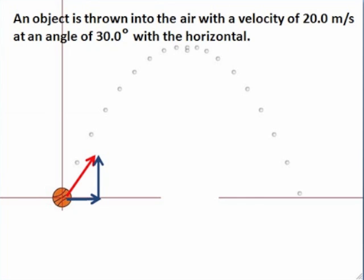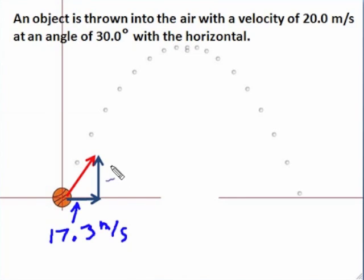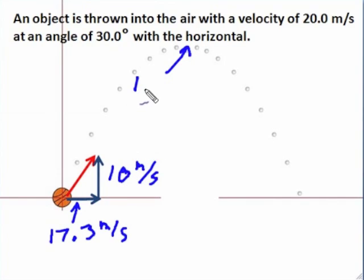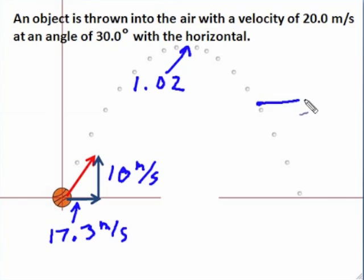We have our projectile with the initial conditions, and we remember that the horizontal component is 17.3. We can't do anything without components. And the vertical component is 10 meters per second. And we know that at the top it was 1.02 seconds to get there. Therefore, the 1.5 is about here. And in order to find the velocity, we need two components that we have to add head to tail.